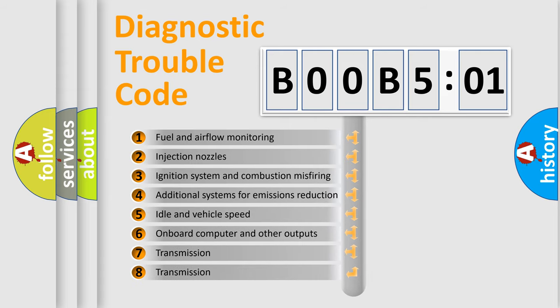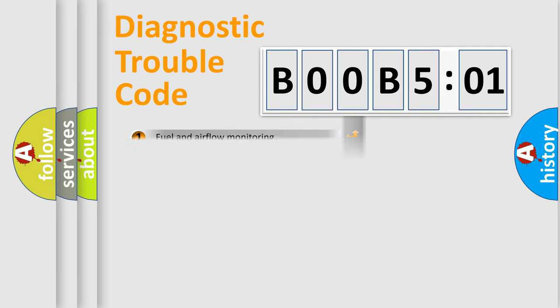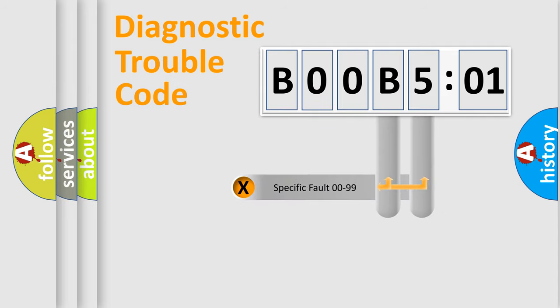The third character specifies a subset of errors. The distribution shown is valid only for the standardized DTC code. Only the last two characters define the specific fault of the group.